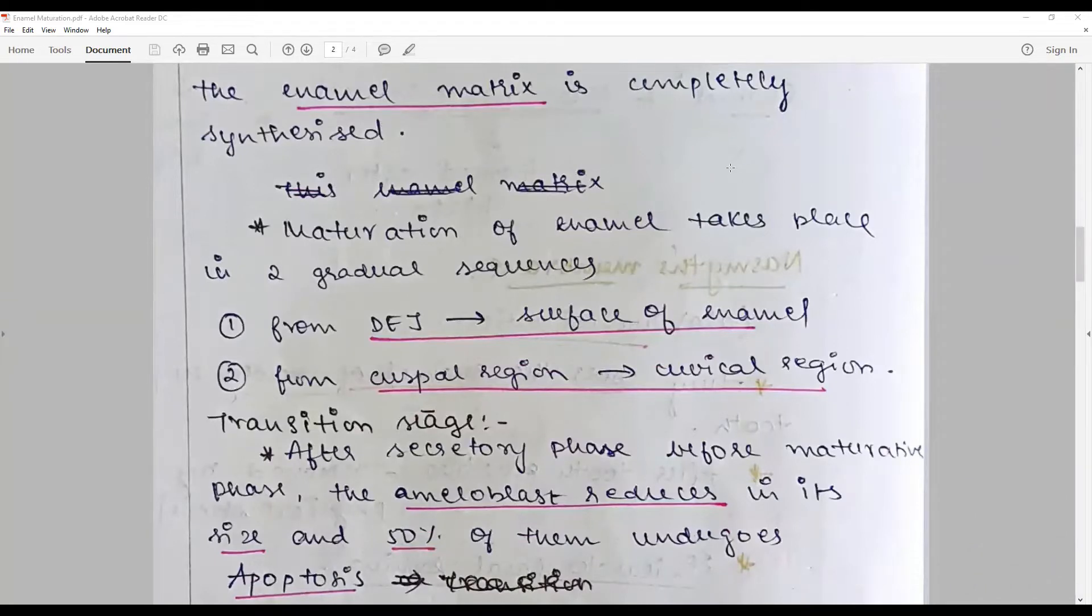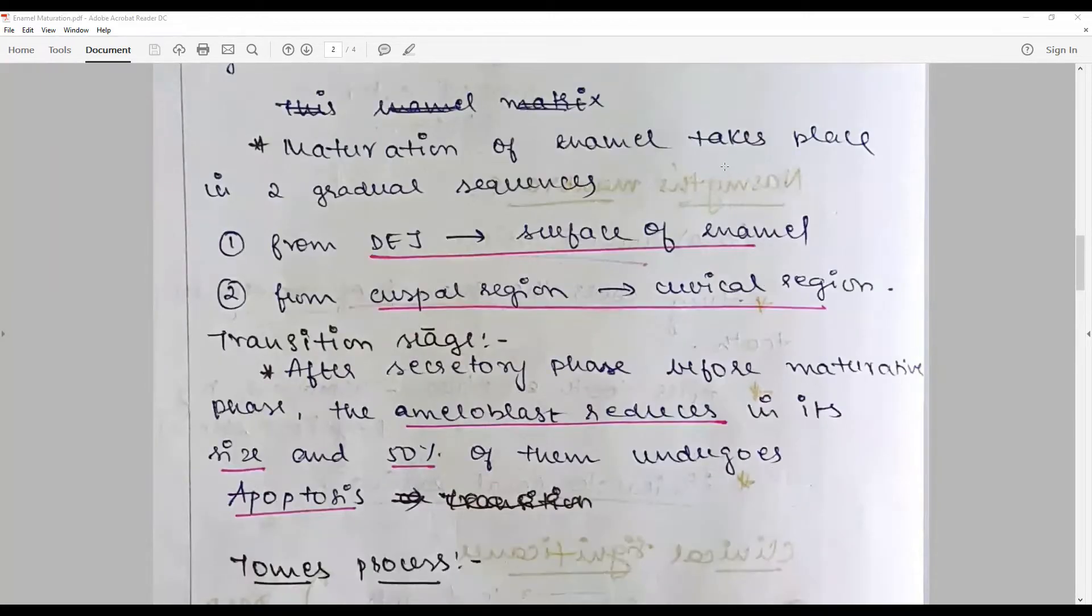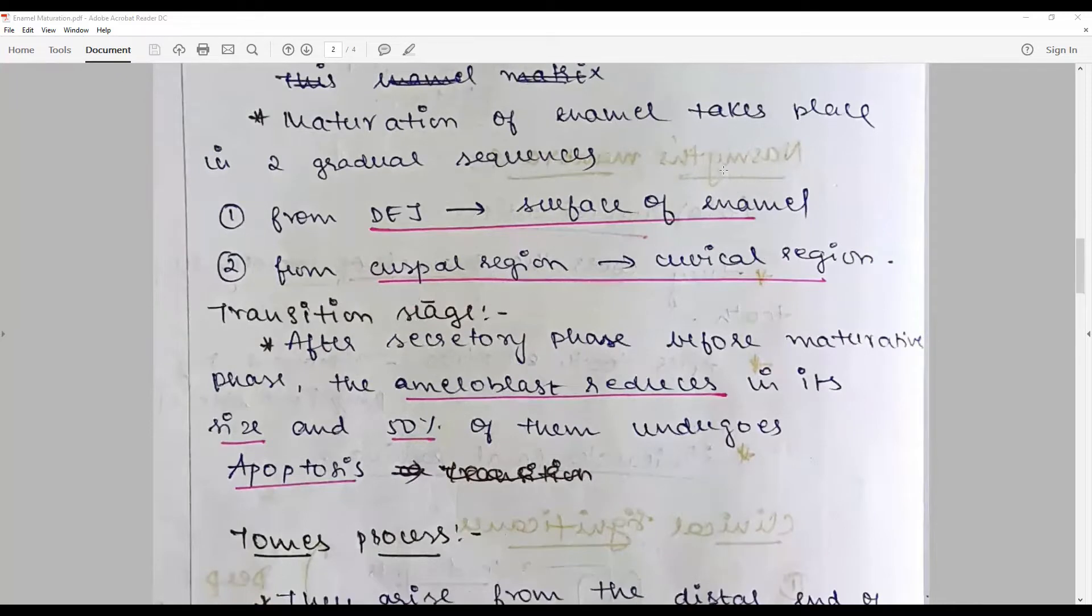The ameloblasts reduce in size and most of them undergo apoptosis. This happens because they are post-functional in nature. Their function is to secrete enamel; once that is done, they become post-functional cells and undergo reduction in size. Also, the nutritional source from the stellate reticulum and stratum intermedium is exhausted, so they collapse.